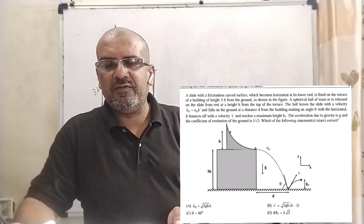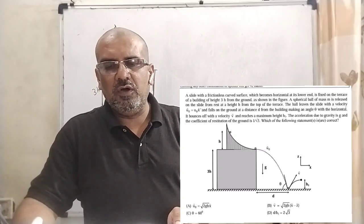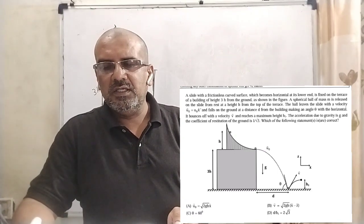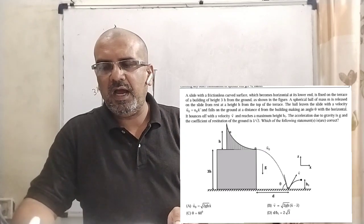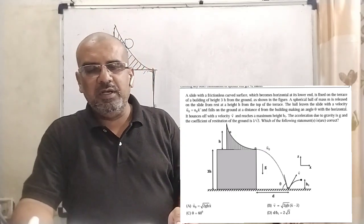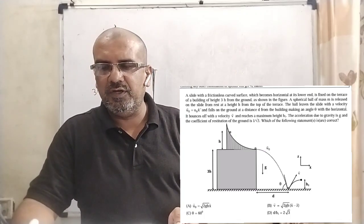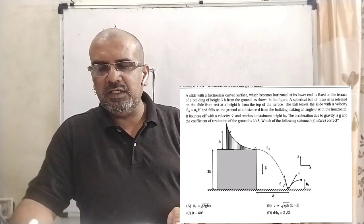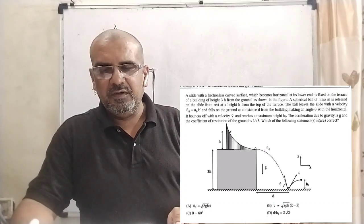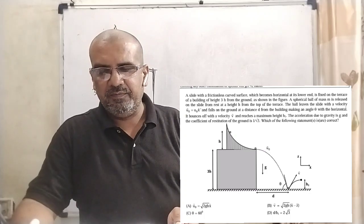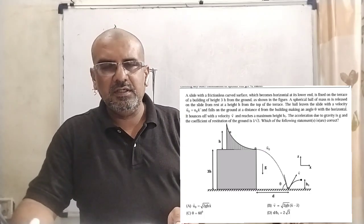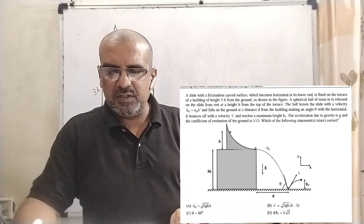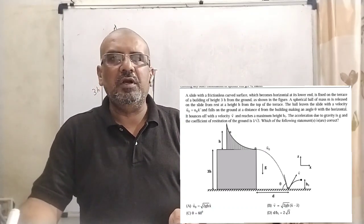A slide with a frictionless curved surface which becomes horizontal at its lower end is fixed on the terrace of a building of height 3h from the ground as shown in the figure. A spherical ball of mass m is released on the slide from rest at a height h from the top of the terrace. The ball leaves the slide with velocity u0 vector equal to u0 x unit vector and falls on the ground at a distance d from the building. It makes an angle theta with the horizontal, bounces off with velocity v vector, and reaches a maximum height h1. The acceleration due to gravity is g and the coefficient of restitution of the ground is 1 by root 3.